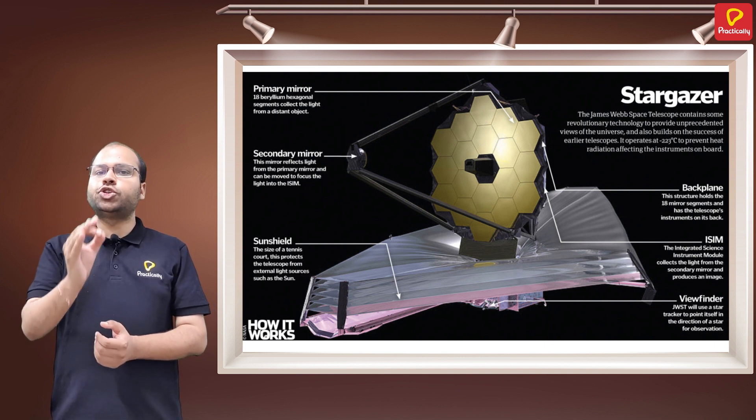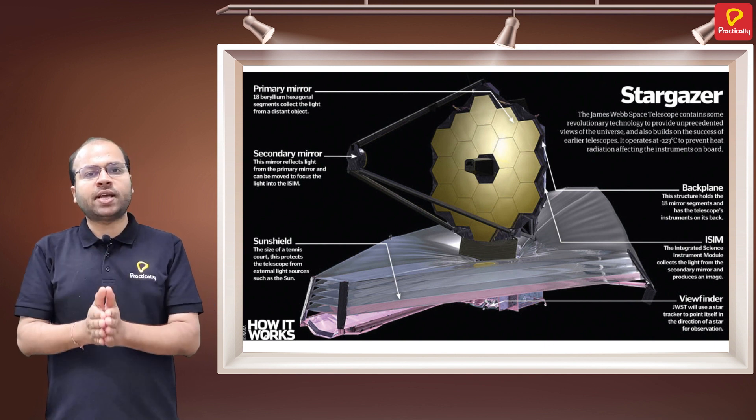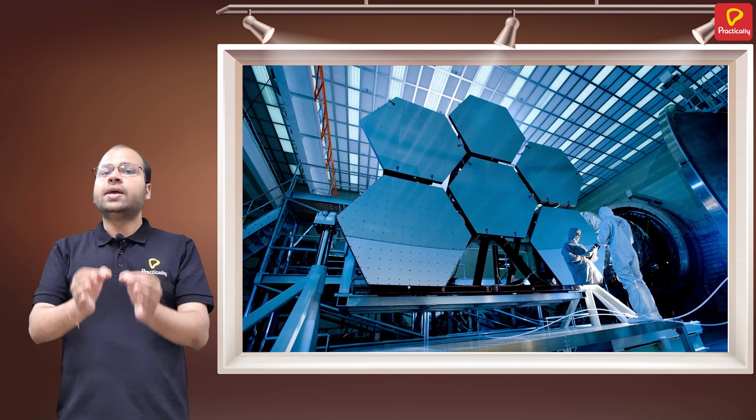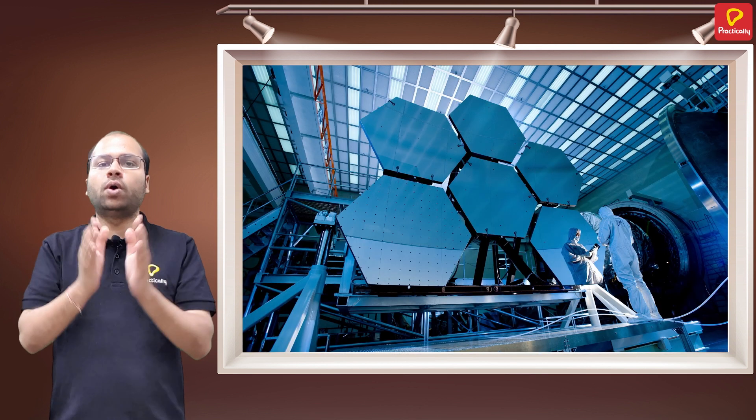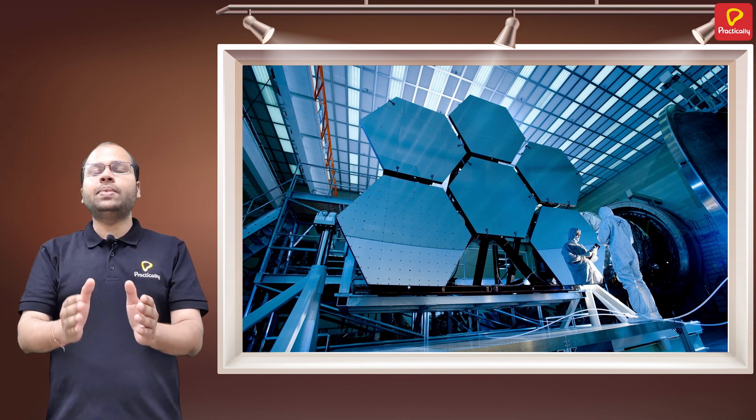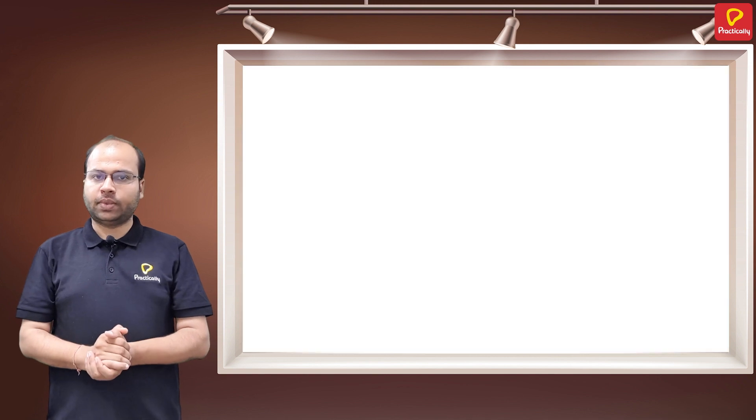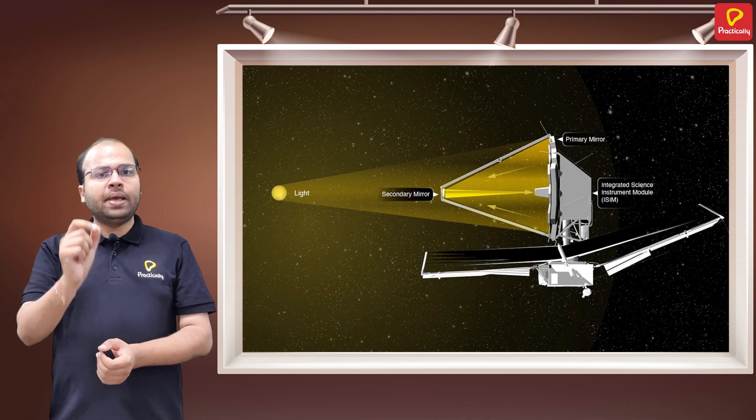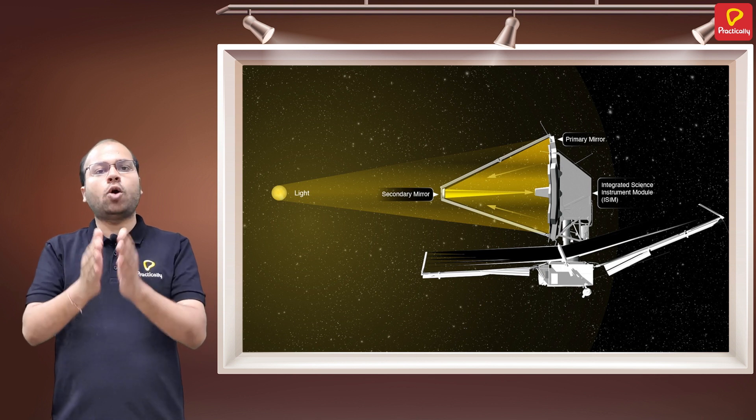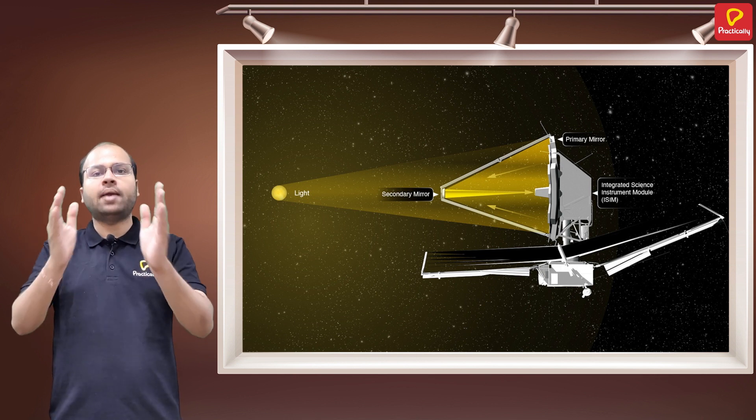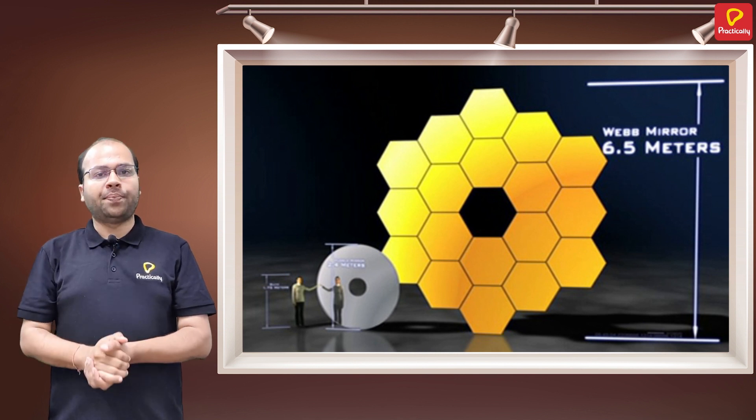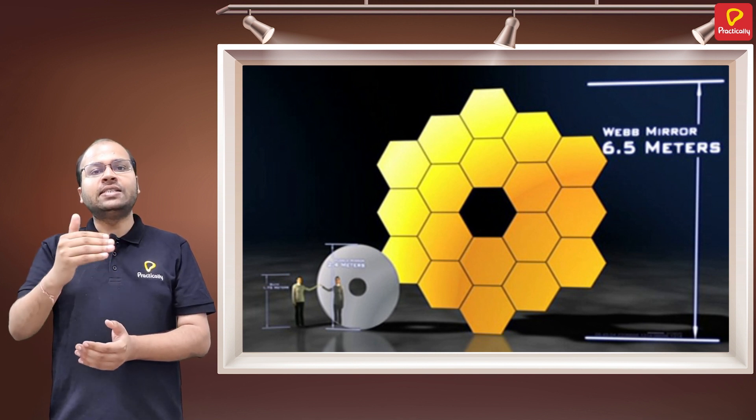These depend upon the area or diameter of its objective. So the desirable aim in constructing an optical telescope is to have an objective of large diameter, which is the case with James Webb Space Telescope.